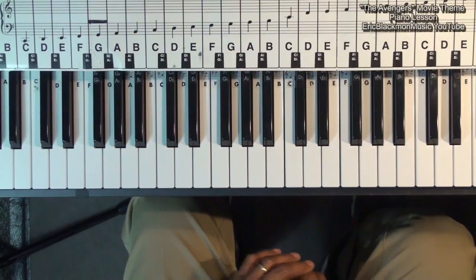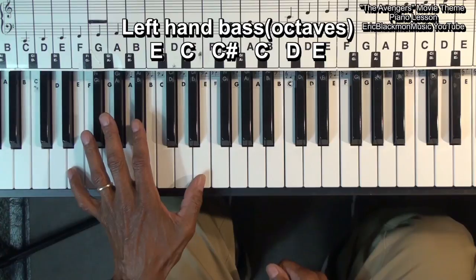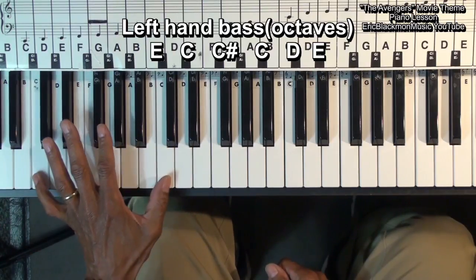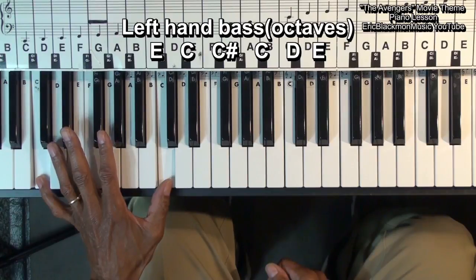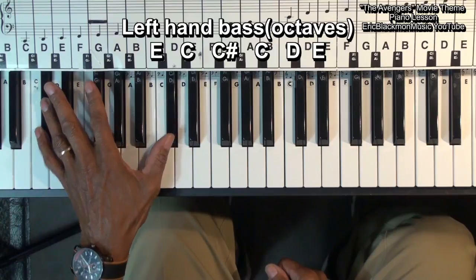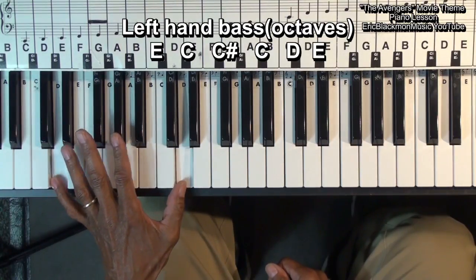We'll start with the left hand. We'll be playing octaves. We're going to play an E, then we'll go to C, C sharp, C, D, and E.